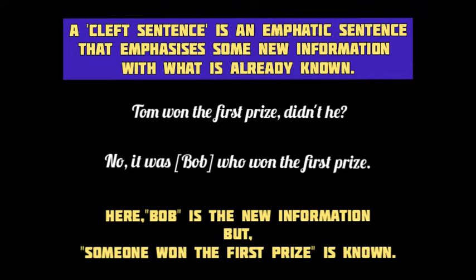For example: 'Tom won the first prize, didn't he?' — it's a simple sentence with a question tag. In reply, we have a cleft sentence emphasizing the new information: 'It was Bob who won the first prize.' This cleft sentence has two clauses: 'It was Bob' is the first clause, and 'who won the first prize' is the second. The it-clause provides the new information — Bob as the name of the winner — and the second clause gives the old information.